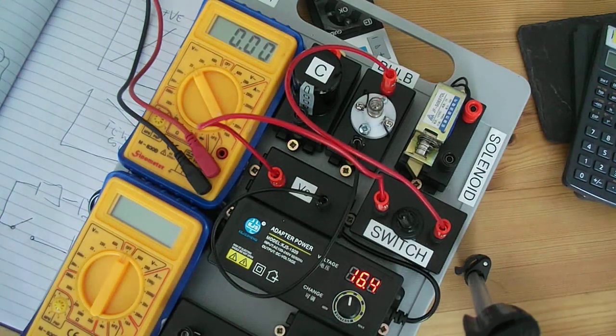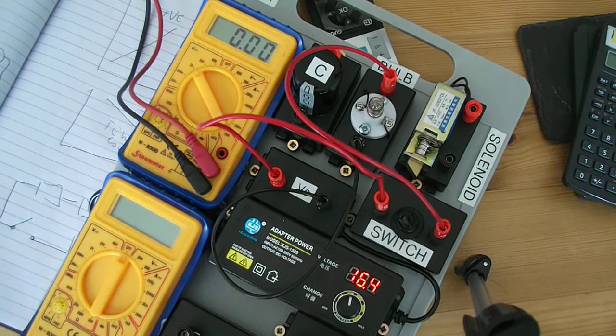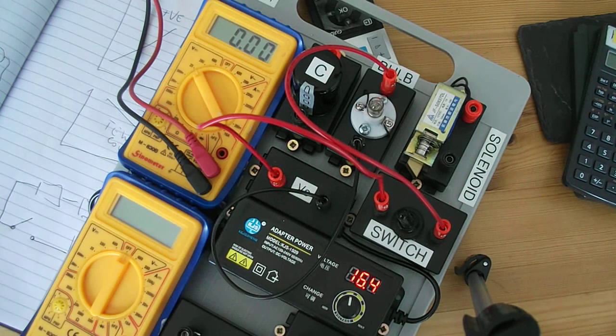Which proves that particularly at high voltage, if a switch is off and the supply is off, if you went to work on that switch, it doesn't mean it's safe. It's not isolated because there's still a voltage across the switch.